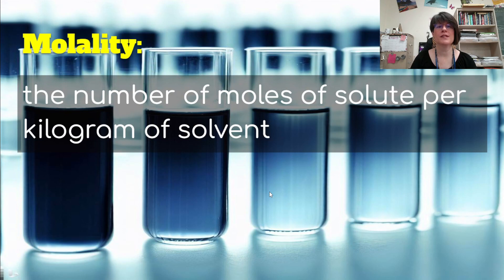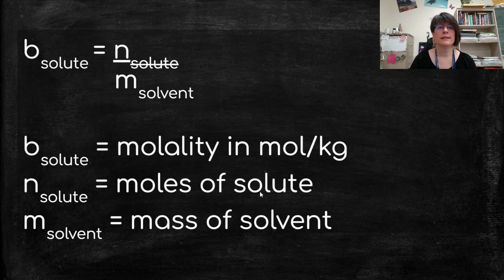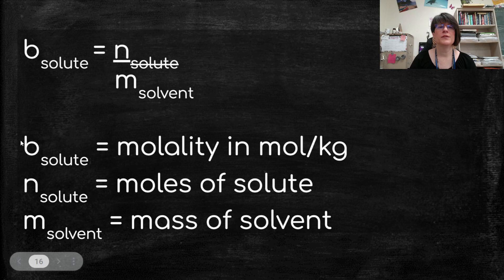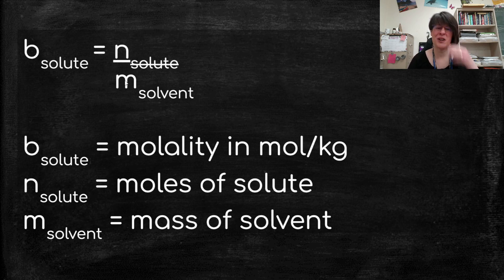Molality is the number of moles of solute per kilogram of solvent. Now, we're also going to introduce here in a little bit molarity. So you'll have to keep those two straight. Molality versus molarity. For molality, we use a B for molality and moles per kilogram. And so the molality of the solute equals the moles of the solute divided by the mass of the solvent.